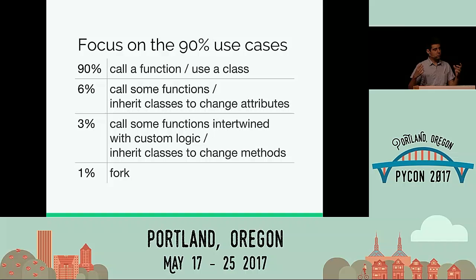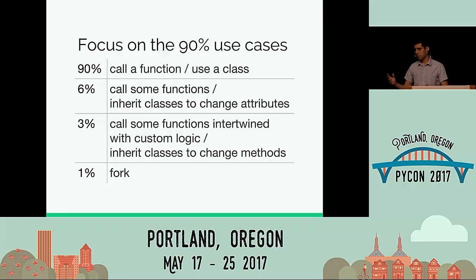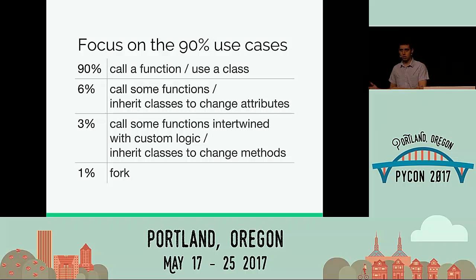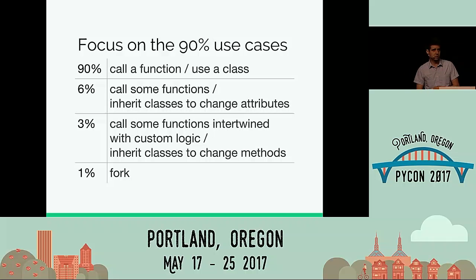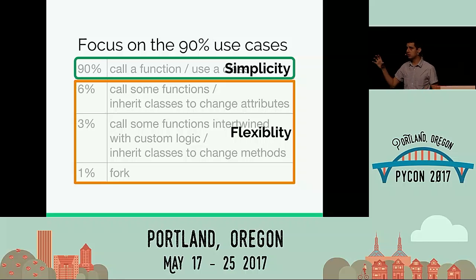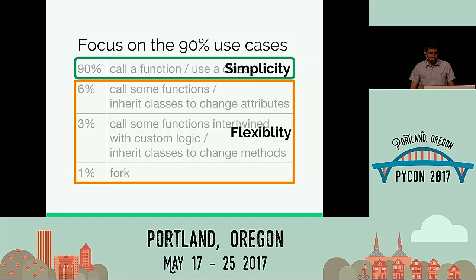The first idea for achieving simplicity in API design is to focus on the 90% use cases. This means 90% of our API users should simply be calling a function or using a class to solve their problem. But we won't forget the other 10% — we still need to handle those minor use cases, maybe by letting them call multiple functions or change attributes. Then we have the 3% who call functions intertwined with custom logic or inherit classes. And for the 1% we can't fix, we can ask them to fork and contribute. The 90% is simplicity; the other 10% is flexibility.